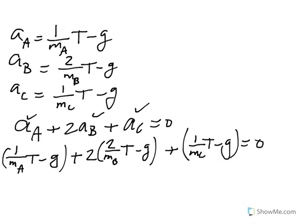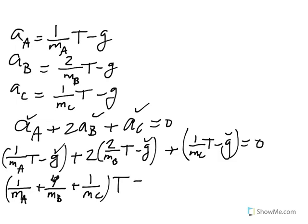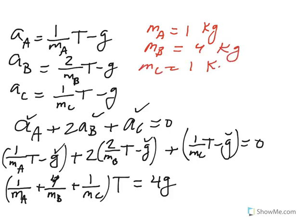So you see now we have one equation only in terms of T. If you clean it up, you end up getting one over mass of A. And then we factor out the T. So we have four over mass of B plus one over mass of C times T. And notice we have one G here, two G here, and one G here. So when you take it to the other side, it would be four G. Now, for convenience, say mass of A is one kilogram. Mass of B is, I'll make it four kilograms. And mass of C is one kilogram, just for convenience.